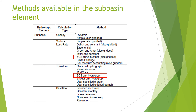Below are the methods available in the subbasin element — basically there are five calculation types. The first is the canopy method, which accounts for interception and evapotranspiration in the watershed. The second is the surface method, representing depression storage in the watershed. The third is the loss method, representing water loss due to infiltration from rainfall. The fourth is the transform method, which converts rainfall to streamflow. The fifth is the baseflow method, to insert existing flow conditions in the outlet stream.